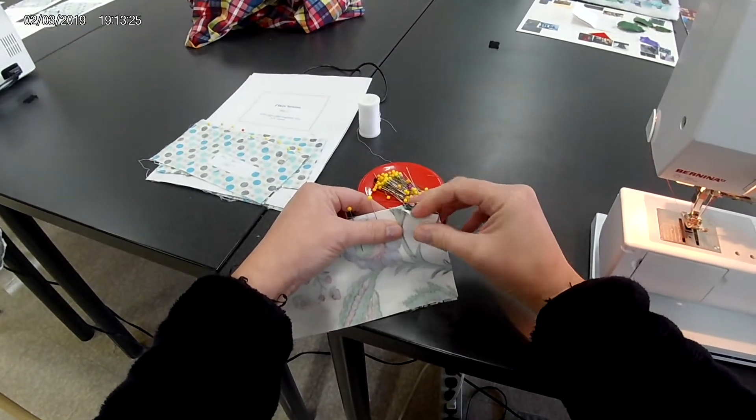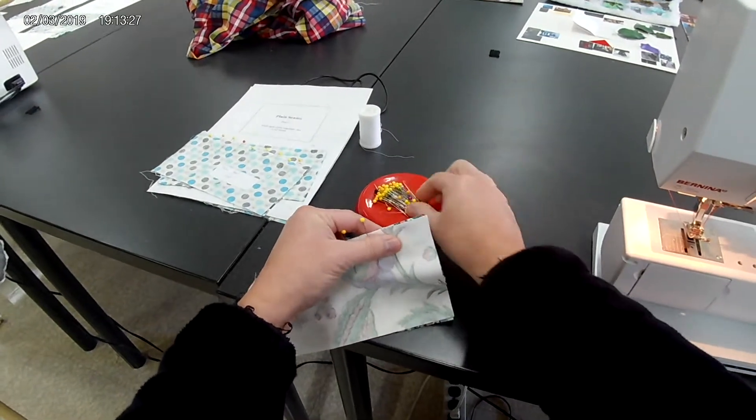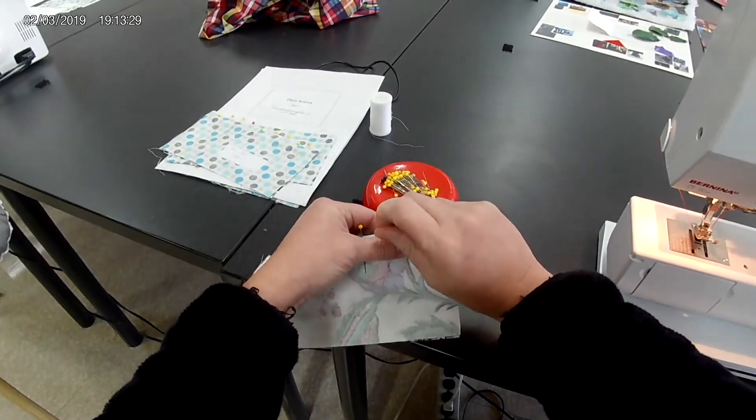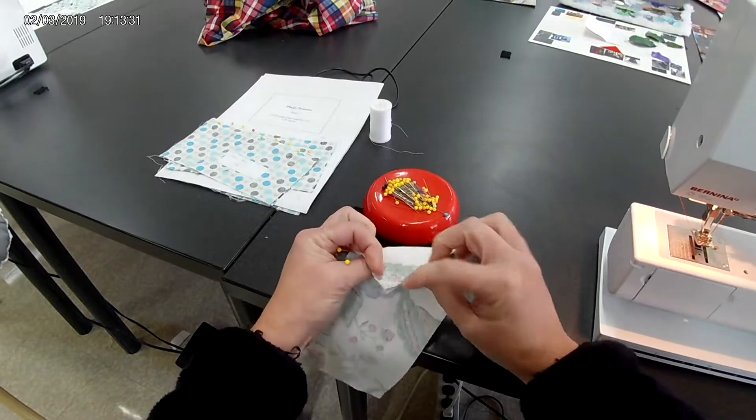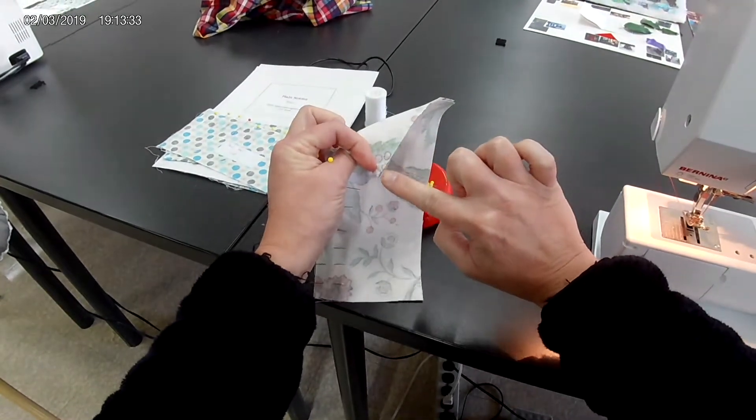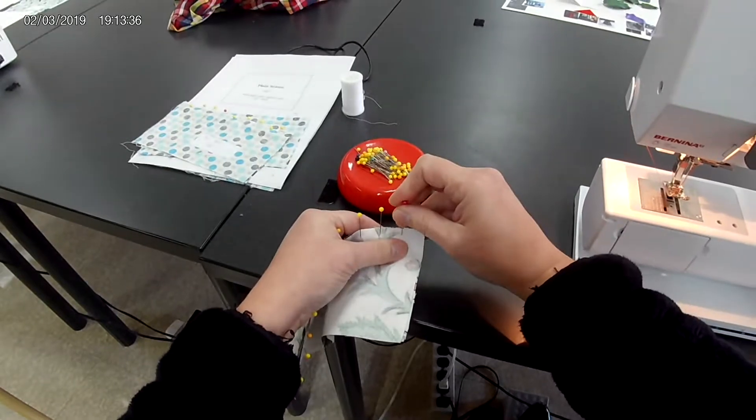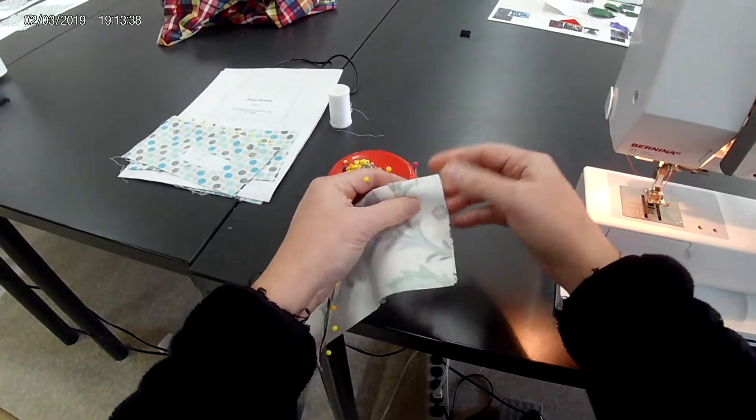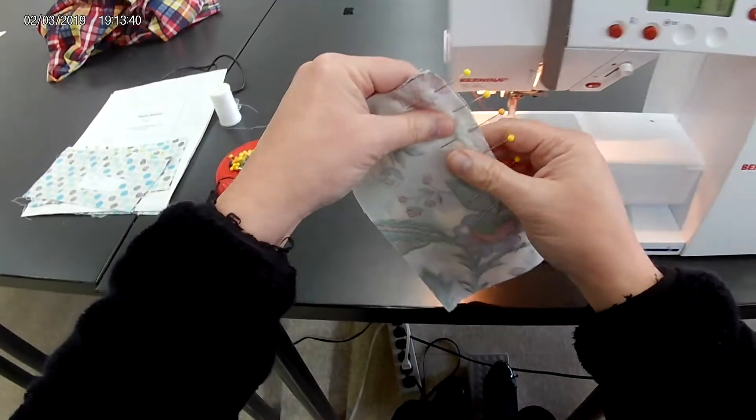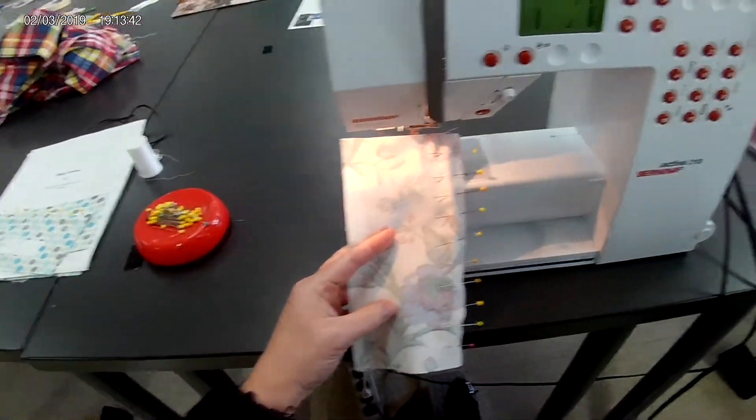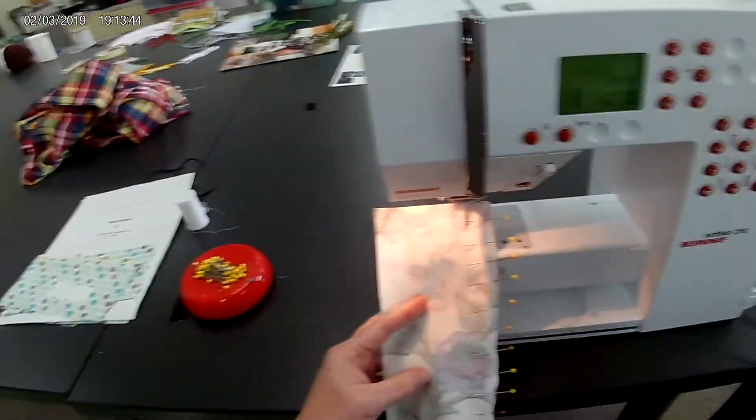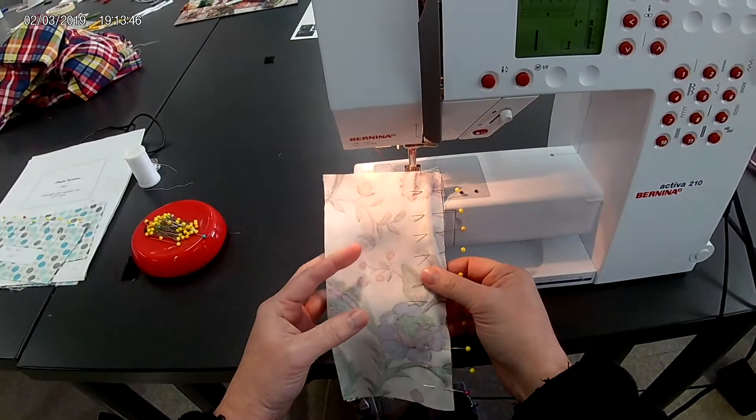Do the best you can to keep everything even, but if you should have an extra, this looks like a 16th of an inch on this side, there's just a little bit extra hanging over, that's okay. Anything larger than an eighth of an inch is a problem. From there, you will bring your sample over to your sewing machine.